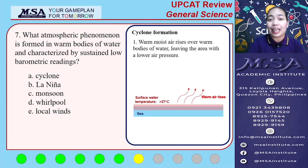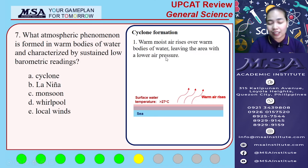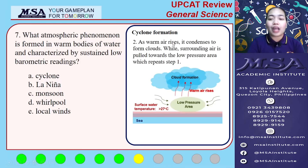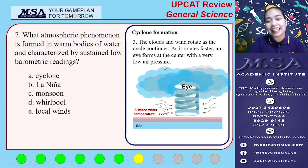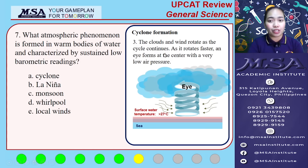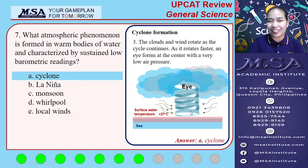For number 7, the answer is cyclone. How does a cyclone form? First, warm moist air rises over warm bodies of water, leaving the area with lower air pressure. As the warm air rises, it condenses to form clouds. The surrounding air is pulled towards the low pressure area, repeating the process. Finally, the clouds and wind rotate as the cycle continues — as it rotates faster, an eye forms at the center with very low air pressure. So for number 7, the answer is letter A.